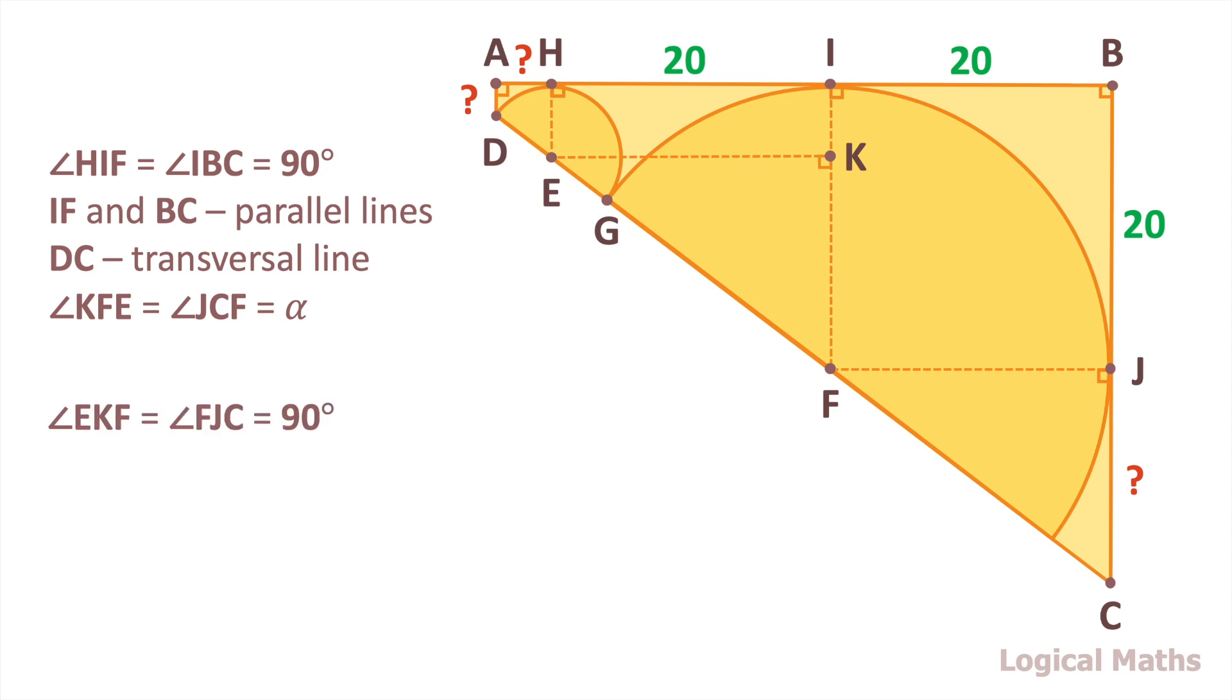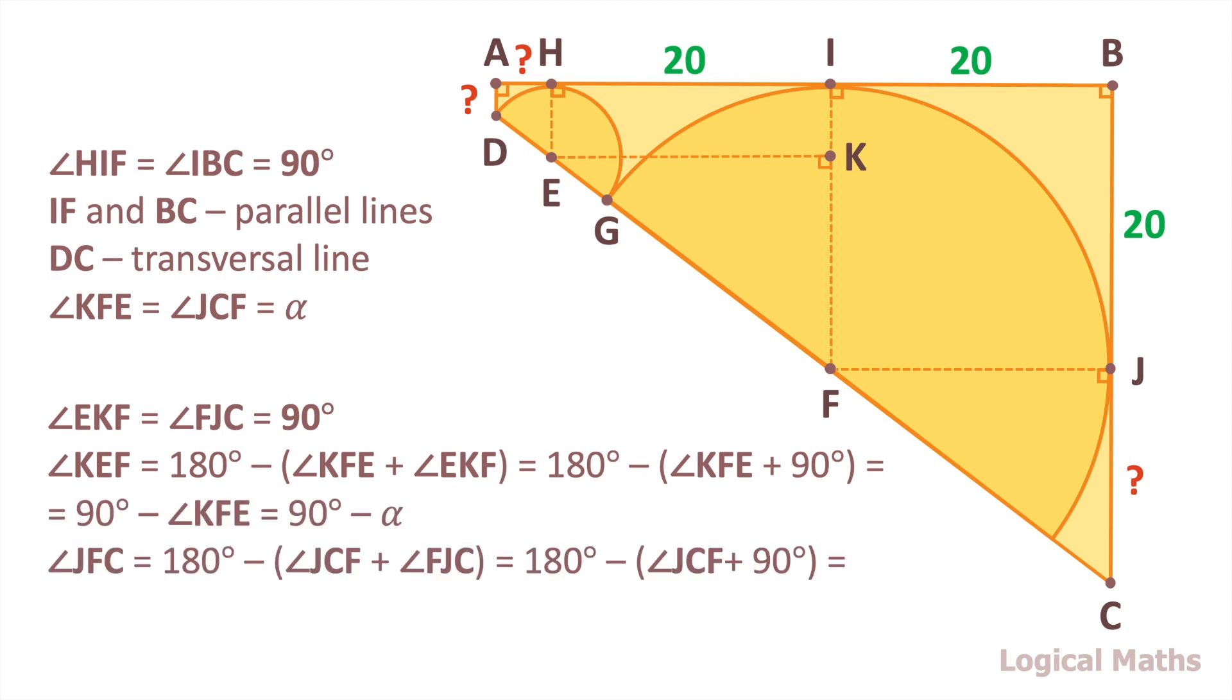Triangles EKF and FJC are right. So angle KFE equals to 90 degrees minus alpha. And angle JFC equals to 90 degrees minus alpha. So the angles are equal.